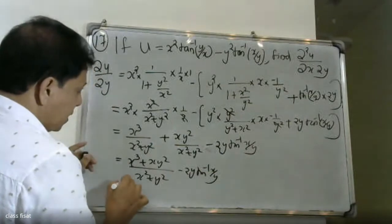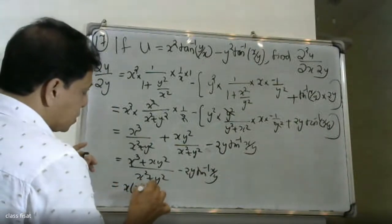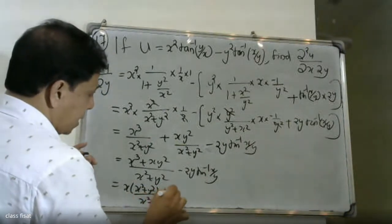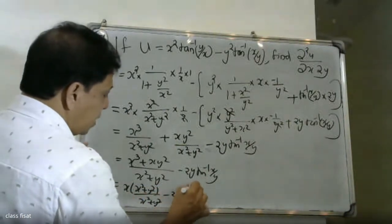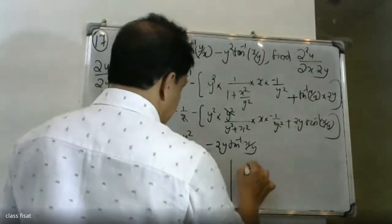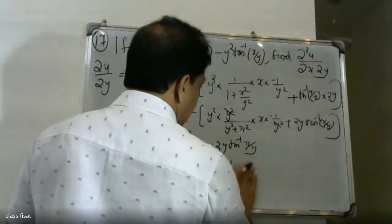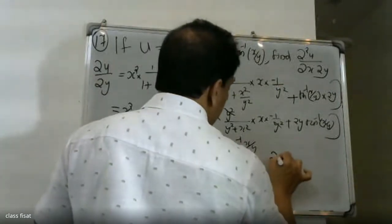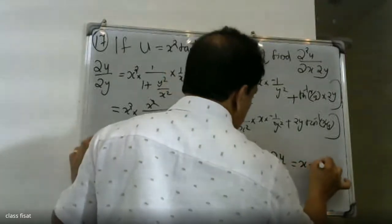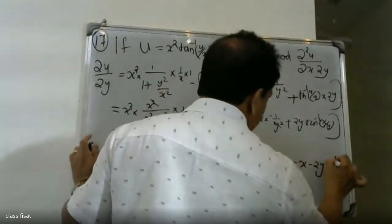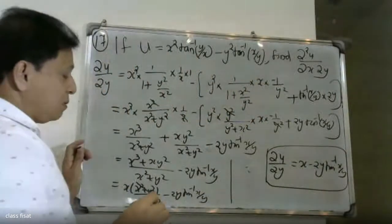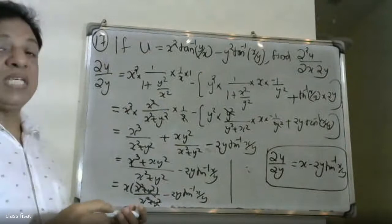Continuing to simplify: minus x square plus y square by x square plus y square, minus 2y tan inverse x by y. The terms combine to give minus x square plus x square canceling, and we get x minus 2y tan inverse x by y. So dou u by dou y equals x minus 2y tan inverse x by y.